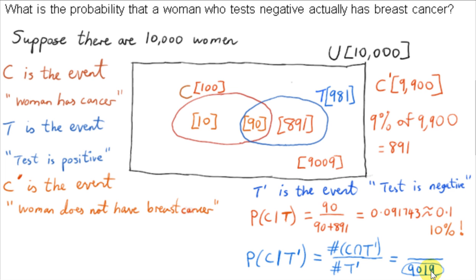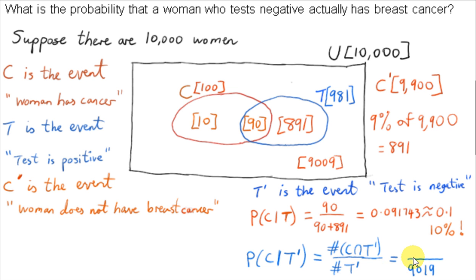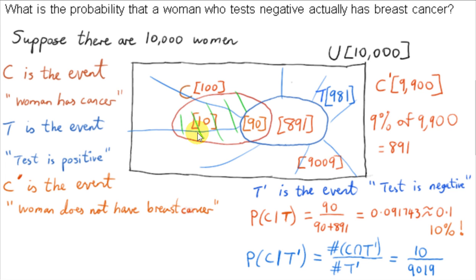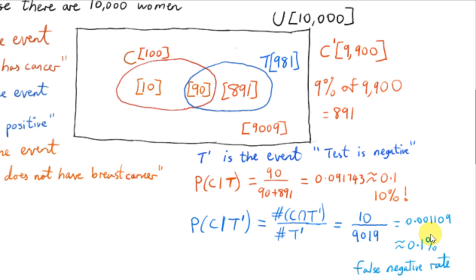How many of the 9,019 women who test negative actually have cancer? From the Venn diagram, 10 of them who test negative have cancer. These 10 elements are outside of T, so they belong to T' (the complement of T), and they are inside set C — they have cancer but test negative. As a percentage, this is about 0.1%.